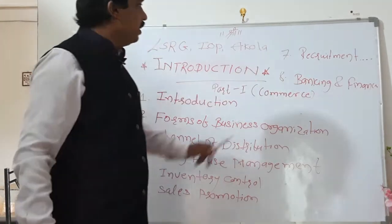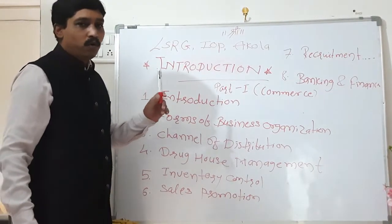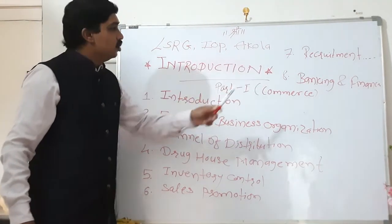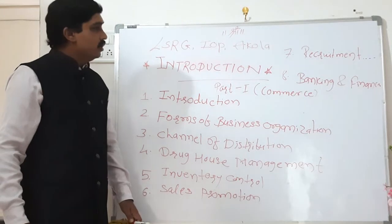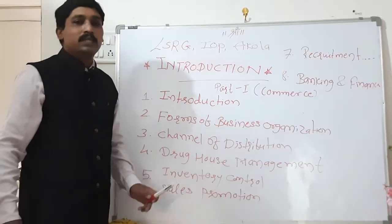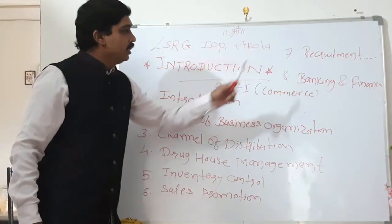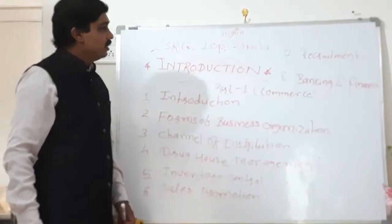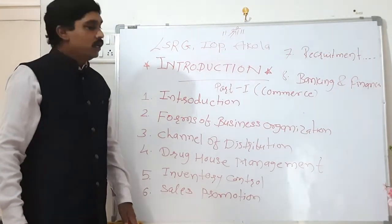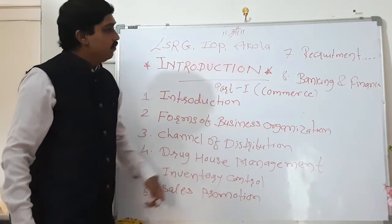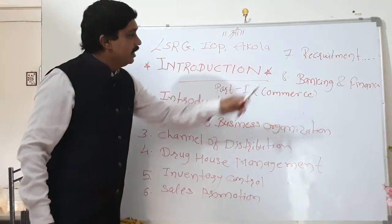The next chapter is recruitment, compensation, and training for pharmacists. These are three different parts. Most students who want to get a job at different levels will find this chapter very helpful. Recruitment is about getting hired at a certain position — you'll learn how to apply and prepare your CV. The chapter also covers training, which plays a very important role in developing personality. There are various types of training — offline as well as online.